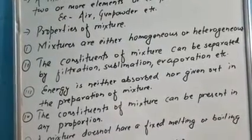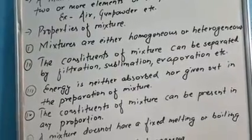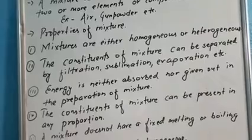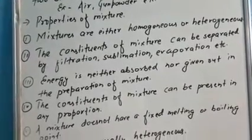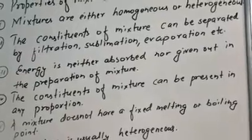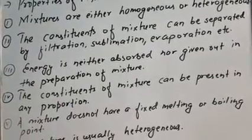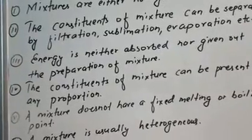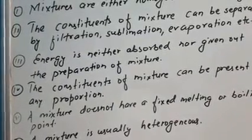First property: mixture homogeneous ya heterogeneous hote hain. Second property: the constituents of mixture can be separated. Mixture ke constituents ko hum alag-alag methods se separate kar sakte hain, like filtration, sublimation, evaporation, etc. Third property: energy is neither absorbed nor given out in the preparation of a mixture — kisi bhi mixture ke formation mein na energy lagti hai aur na energy release hoti hai.